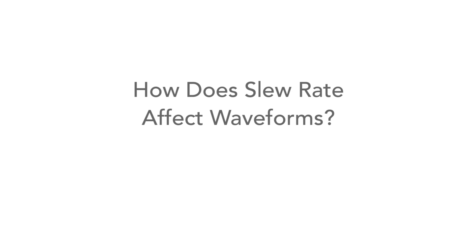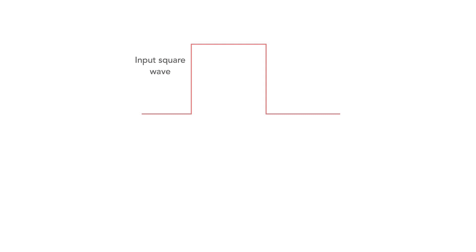So how does slew rate affect signals? Possibly the most obvious is seen on a square wave. Here you can see the straight rising and falling edges. But these cannot be copied exactly by the amplifier, as we see on this second diagram. Instead, they're not as steep. In reality, they'll also probably be rounded a little bit more as well.